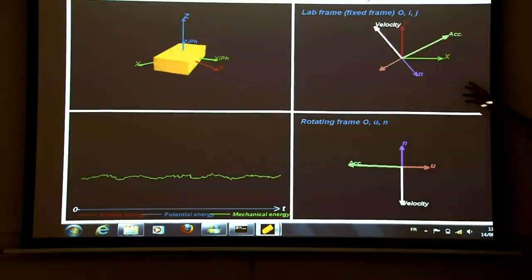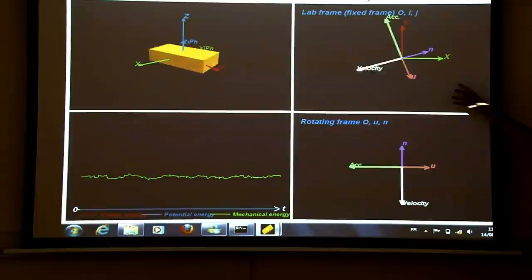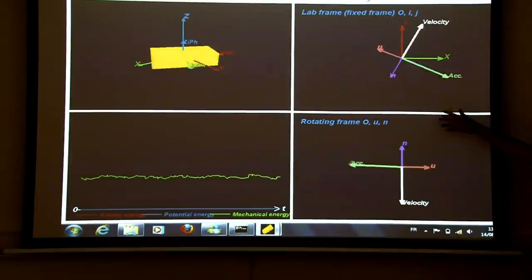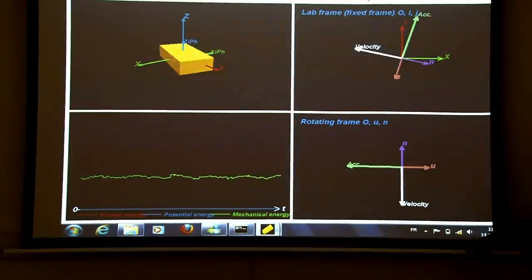In order to now analyze orientations of acceleration vector and velocity vector, and also the length and how that can be changed, we move to a rotating frame. That's the frame attached to the iPhone.